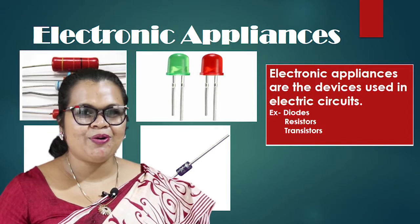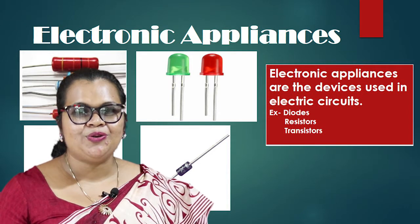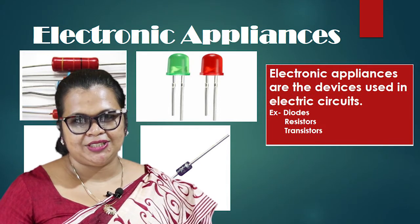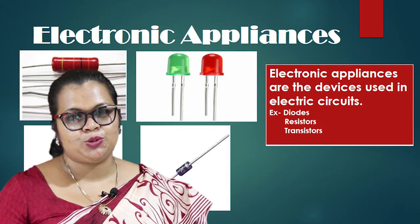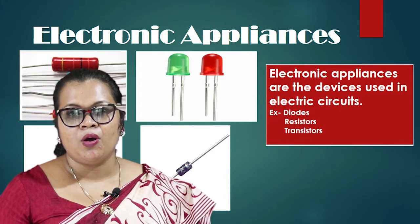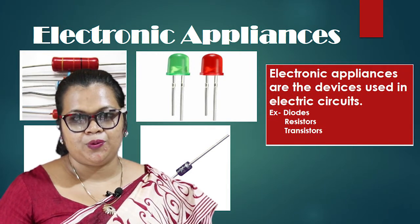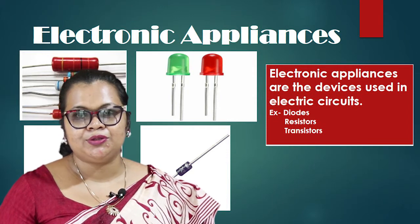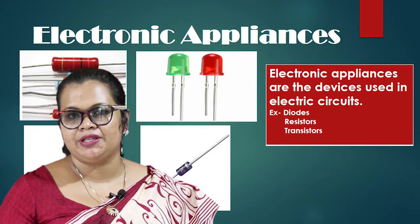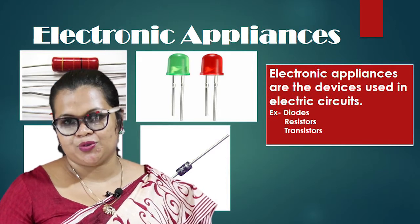We are going to learn about these electronic accessories in detail. First of all, you are going to learn about diodes. What is the unique feature of a diode? The very special feature of the diode is that it allows current flow only along one direction. When we are connecting a diode to a circuit, we always have to connect the positive terminal of the diode to the positive terminal of the electric cell. Then only current flows through the diode.